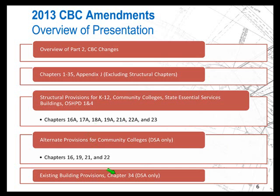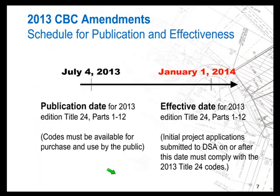We're not going to get into Chapter 34A today, which is adopted only by OSHPD. They have a very specific existing building program involving non-structural and structural performance categories and the SB1953 programs — that would be a whole webinar in itself. The 2013 California Building Code will be effective at the end of this year, starting January 1. Anything submitted after that date will have to comply with the 2013 CBC.